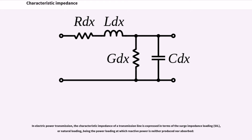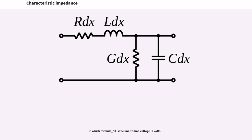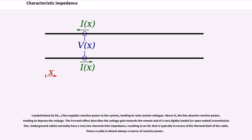In electric power transmission, the characteristic impedance of a transmission line is expressed in terms of the surge impedance loading, or natural loading, being the power loading at which reactive power is neither produced nor absorbed. Formula 58 is the line-to-line voltage in volts. Loaded below its SIL, a line supplies reactive power to the system, tending to raise system voltages. Above it, the line absorbs reactive power, tending to depress the voltage.